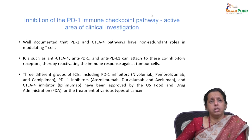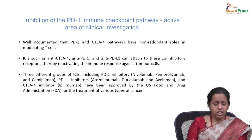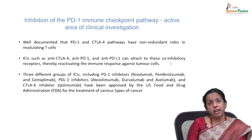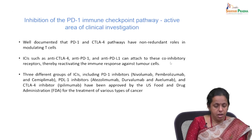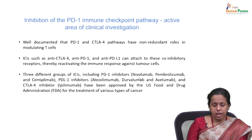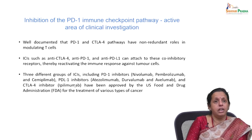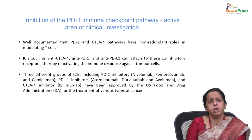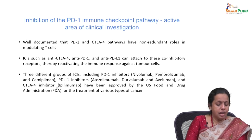Both PD-1 and CTLA-4 pathways have non-redundant roles. Immune checkpoint inhibitors — antibodies — can attach to co-inhibitory receptors, thereby reactivating the immune response against tumor cells. Different groups of immune checkpoint inhibitors (ICIs) include: PD-1 inhibitors — nivolumab, pembrolizumab, and cemiplimab; PD-L1 inhibitors — atezolizumab, durvalumab, and avelumab; and CTLA-4 inhibitors — ipilimumab. All have been approved by the US FDA for treatment of various cancer types.